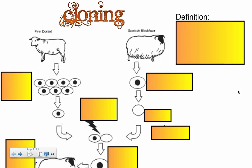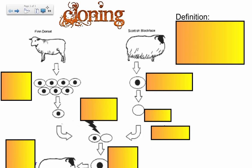Cloning has been made famous by Dolly the Sheep. We're going to outline the process of how Dolly the Sheep was created. Cloning can be split up into reproductive cloning and therapeutic cloning.